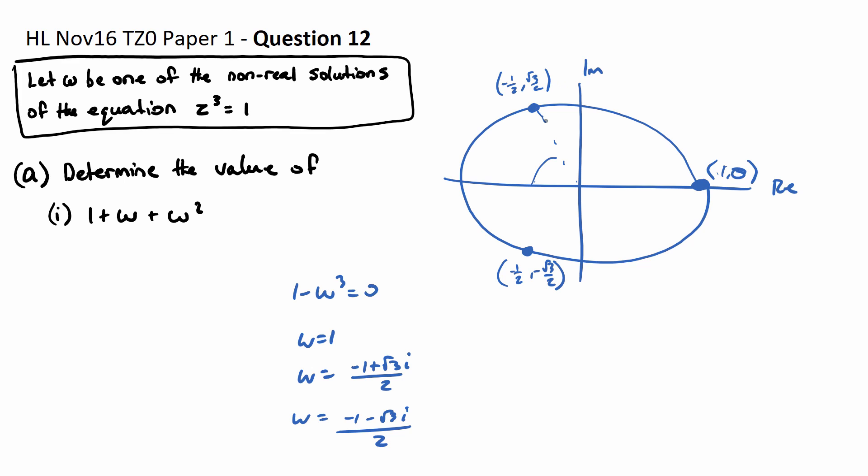If we were to sum these up because this is essentially 1, this is w, this is w squared, if we sum them up, because the x is 1 and that's negative 1 half and negative 1 half, the x directions will sum to 0 and in terms of the y directions this will also sum to 0.